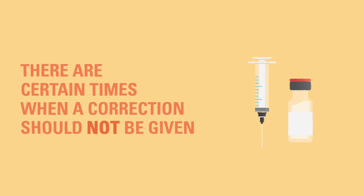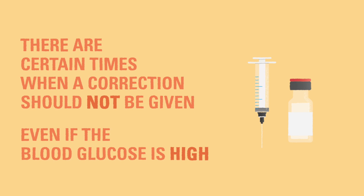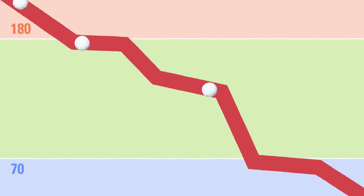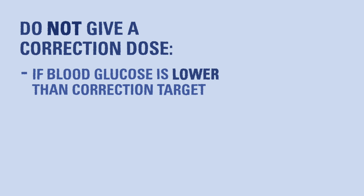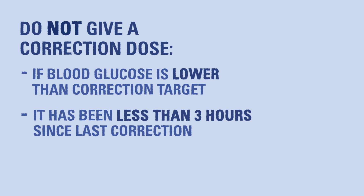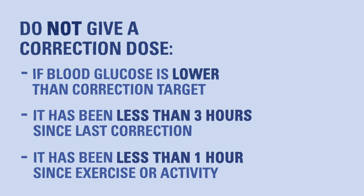There are certain times when it is not a good idea to give a correction dose, even if the child's blood glucose is higher than the target range. Giving a correction dose during these times might cause the blood glucose to drop quickly and cause hypoglycemia instead. You should not give a correction dose if: the child's blood glucose is lower than their correction target; it has been less than three hours since the child was given a correction dose; or it has been less than one hour since the child engaged in vigorous activity.